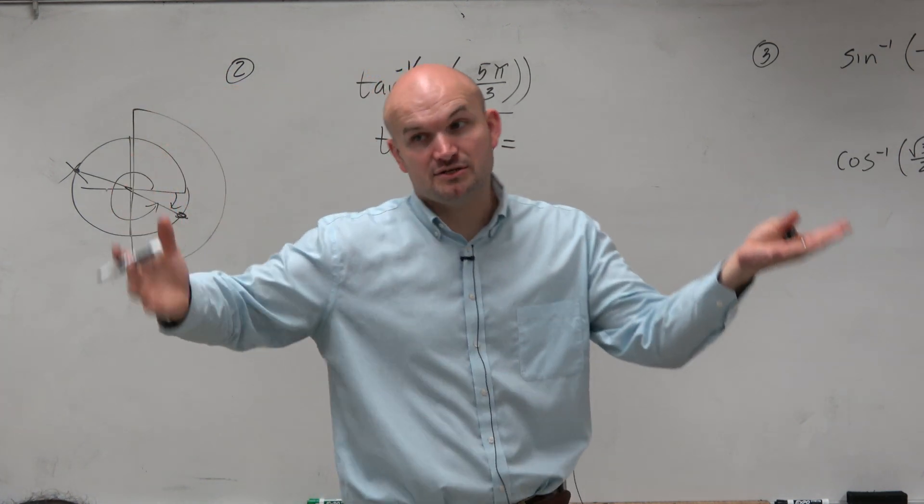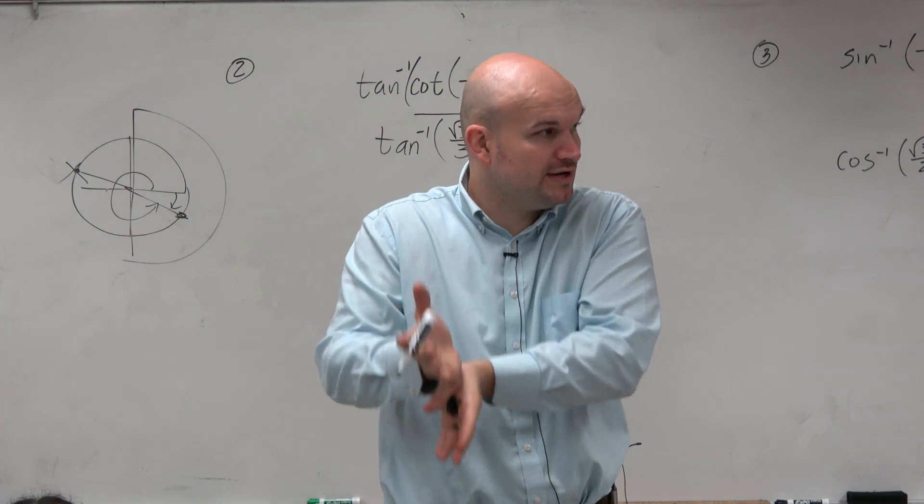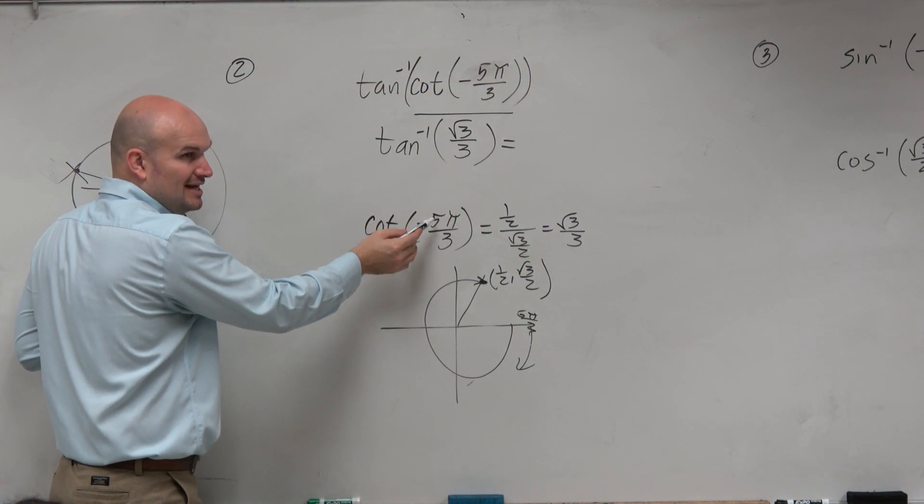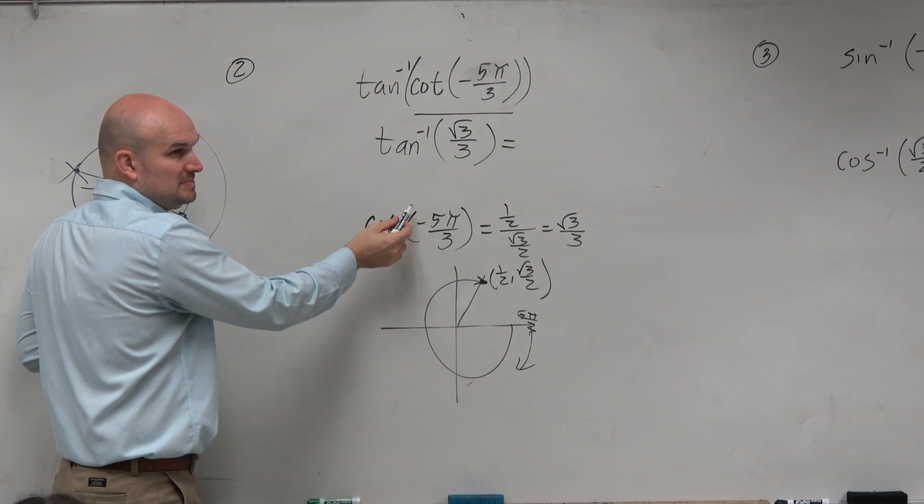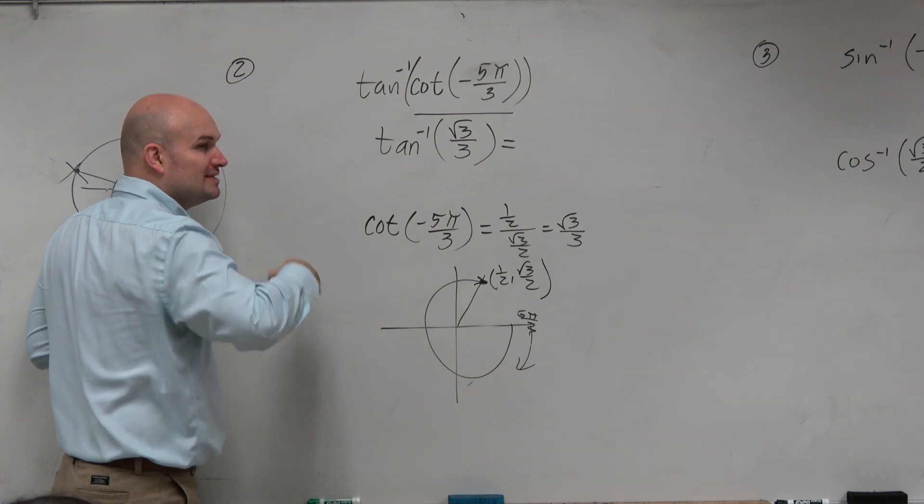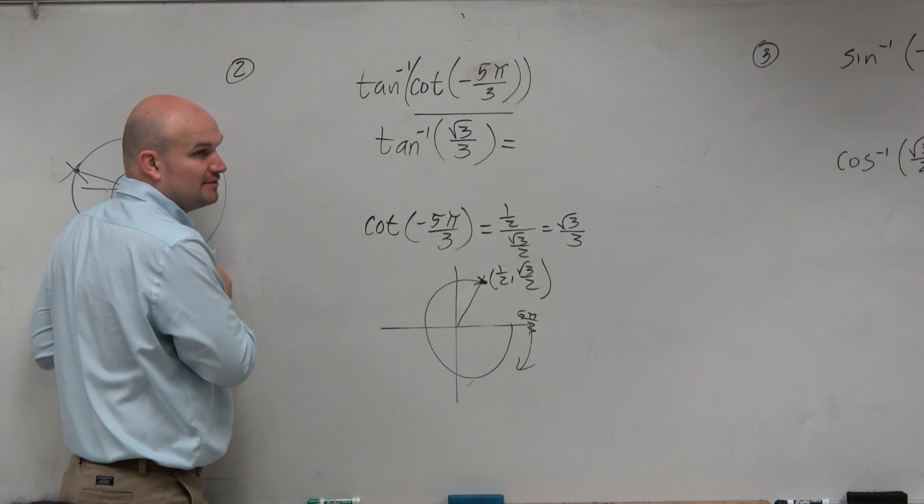So now you got to say, well, when is tangent inverse square root of 3 over 3? It's obviously not at pi over 3. It's going to be at, well, no. When is the y-coordinate over the x-coordinate going to be square root of 3 over 3?